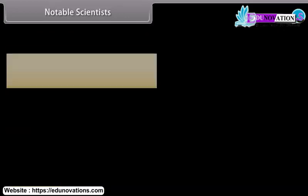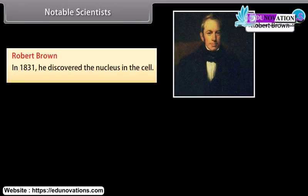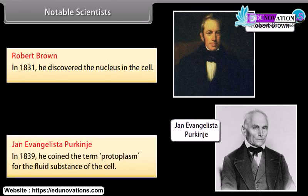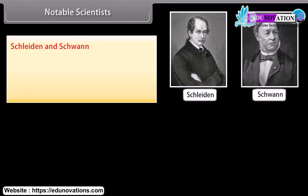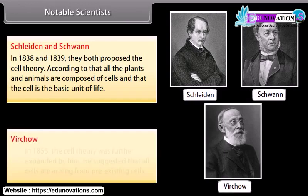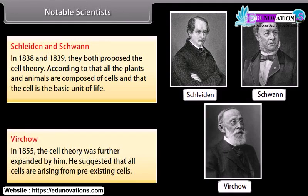Notable scientists: Robert Brown in 1831 discovered the nucleus in the cell. Jan Evangelista Purkinje in 1839 coined the term protoplasm for the fluid substance of the cell. Schleiden and Schwann in 1838 and 1839 both proposed the cell theory — that all plants and animals are composed of cells and that the cell is the basic unit of life. Virchow in 1855 further expanded the cell theory, suggesting that all cells arise from pre-existing cells.